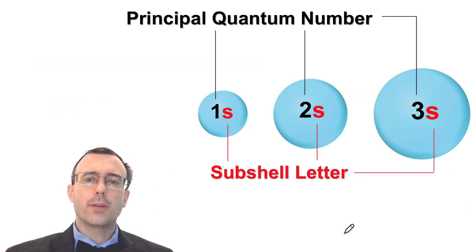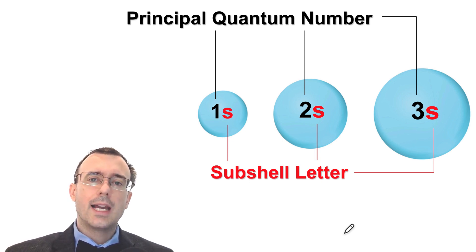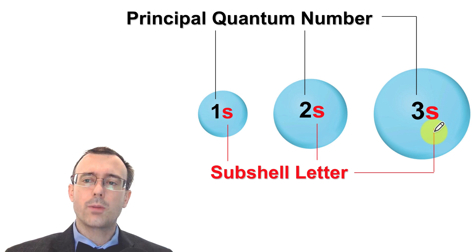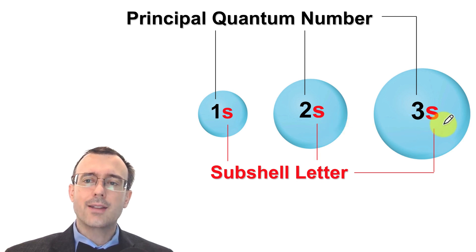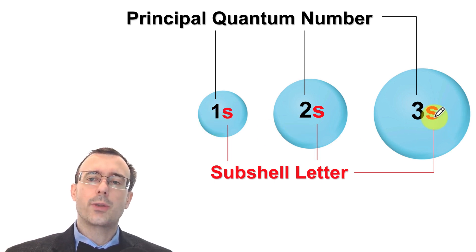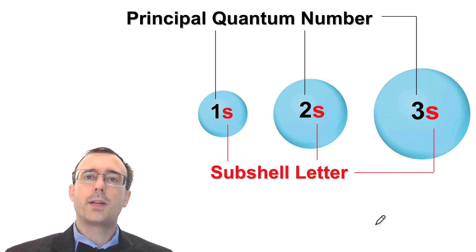Now let's look at how we label the different atomic orbitals. They are all labeled with a number and a letter. The number in front is the principal quantum number, and the letter that comes after is the subshell letter. So every atomic orbital can be labeled with both a number and a letter — for example, 1s, 2s, 3s. Each of these has exactly the same shape, which is why the subshell letter is the same, but their principal quantum numbers vary, which is why their size is different. n=3 is bigger than n=2, which is bigger than n=1.